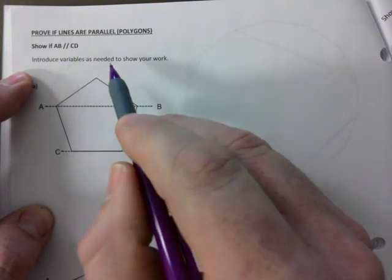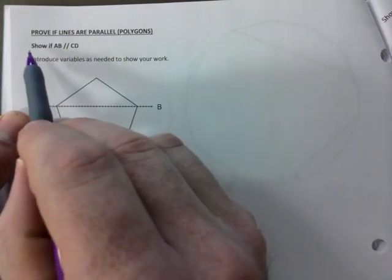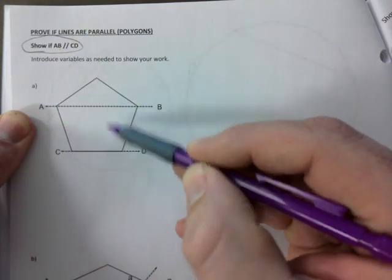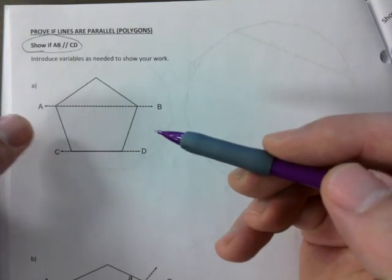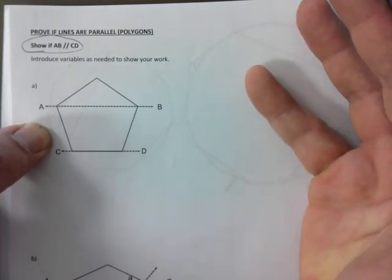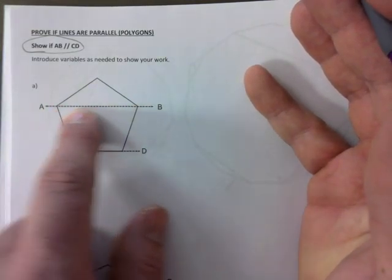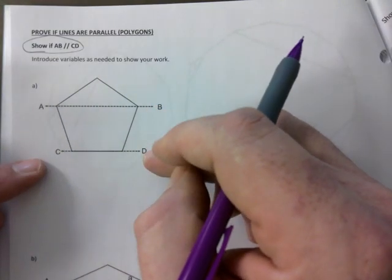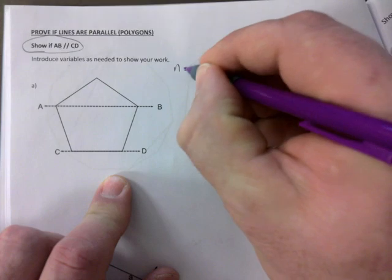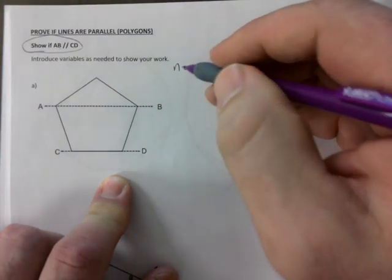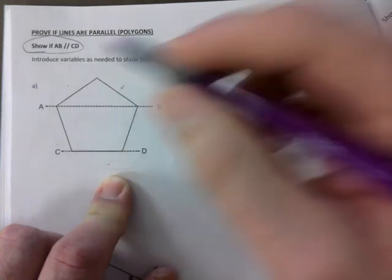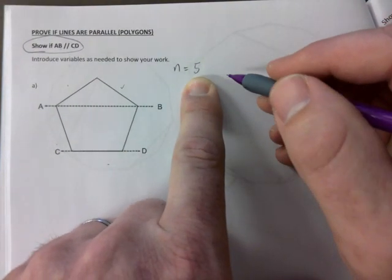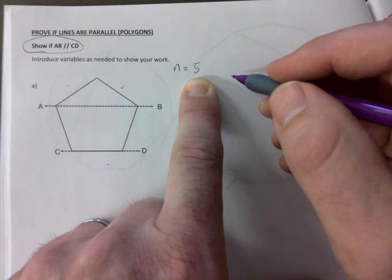Let's start with one here. Introduce variables as needed to show your work. So our quest is to show if AB is indeed parallel to CD. That's what we're after. We are inside a polygon. These are technically diagonals. So let's figure out the number of sides first. That would be my first step - find the number of sides of the polygon. One, two, three, four, five.